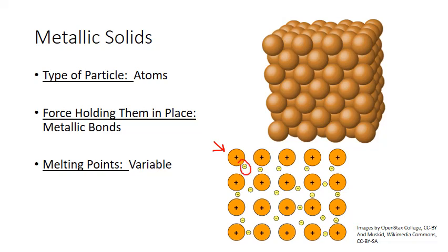And these delocalized electrons don't form as strong of bonds as we see for ionic or covalent bonds. As a result the metallic solids can have some pretty low melting points like mercury which melts at negative 39 degrees Celsius.